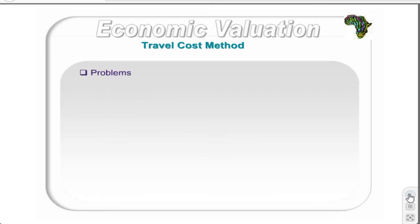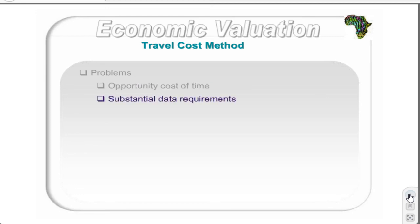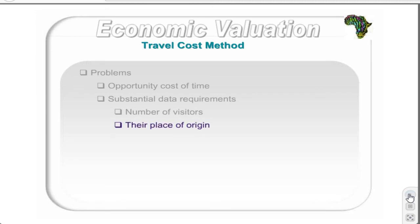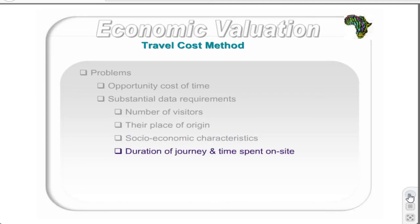Two major problems are related to the travel cost method. The first relates to the opportunity cost of time — there is still debate on the appropriate inclusion of time as a cost variable, and it is generally advised that income is used as a proxy for the opportunity cost of leisure. The second problem is that substantial data is required, including data on number of visitors, their place of origin, their socio-economic characteristics, the duration of trips and time spent on site, as well as a range of environmental quality attributes.